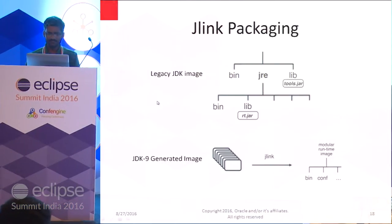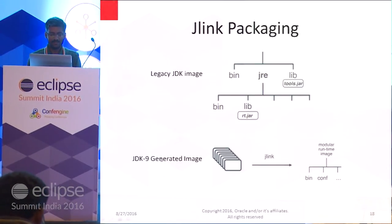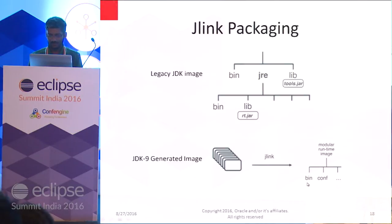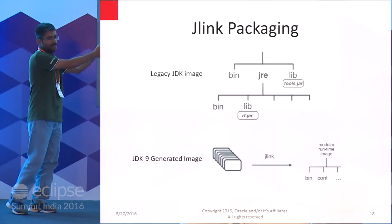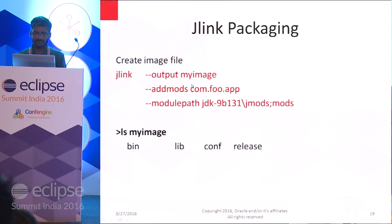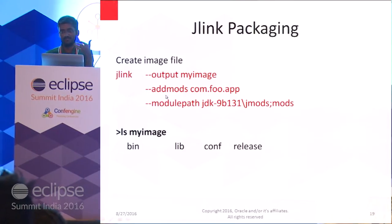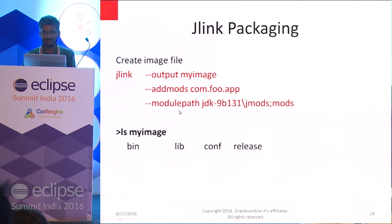The regular JDK image structure up to JDK 8 was: bin, JRE, lib — with rt.jar, tools.jar, etc. With JDK 9, the image structure is simply bin, conf, and lib. There is no JRE subdirectory, no rt.jar, no tools.jar — all those have been removed. J-Link takes a group of modules and packages them into your runtime image. The command takes '--output', '--add-mods' (the root module name), and '--module-path' (where dependent modules are located).